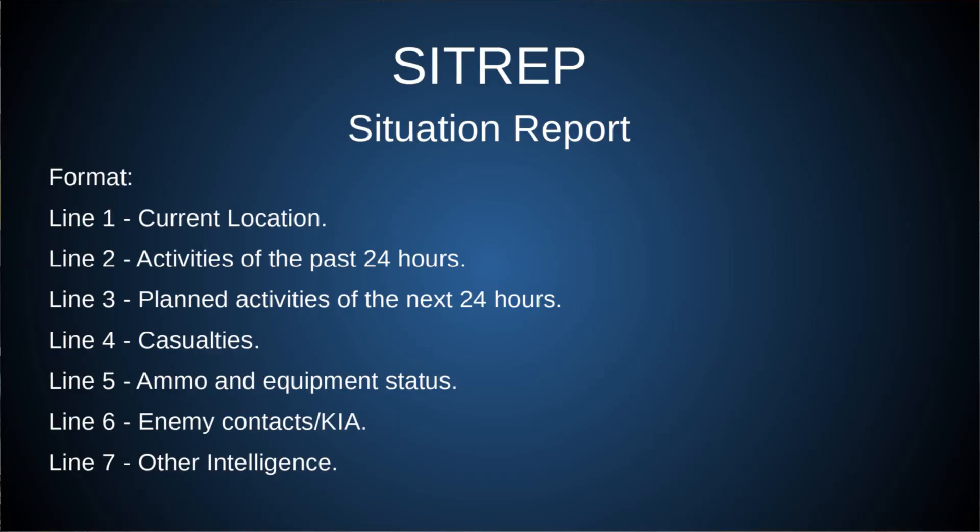Line 6 is enemy contacts and killed in action. Line 7 is other intelligence. Again, try to keep it very high level, very specific, and only what is relevant to the mission that the base camp or commander needs to know about.